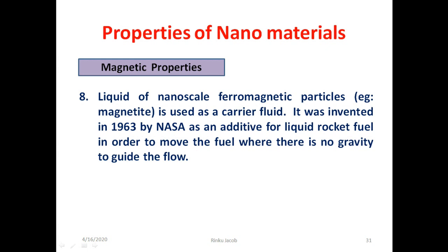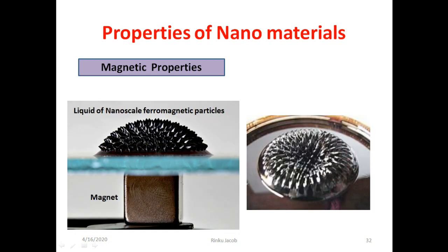Liquid of nanoscale ferromagnetic particles, for example magnetite, is used as a carrier fluid. It was invented in 1963 by NASA as an additive for liquid rocket fuel in order to move the fuel where there is no gravity to guide the flow. The figure shows this liquid: when a magnet is placed under the container, due to repulsion, the liquid moves up and forms a pattern on its surface.